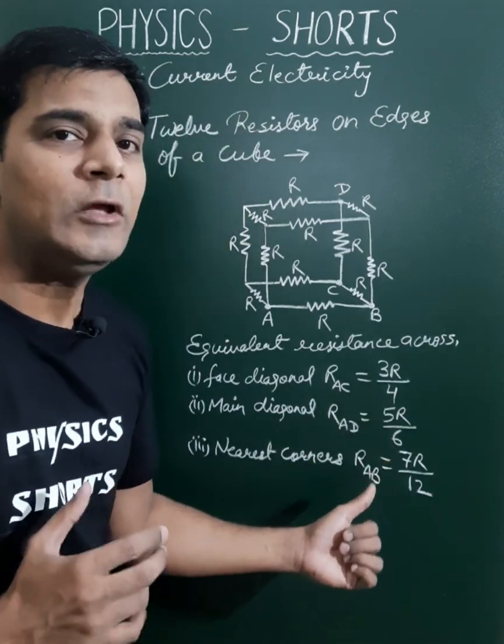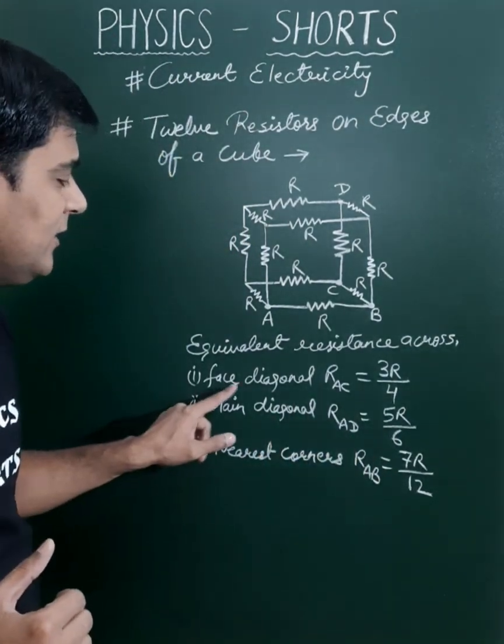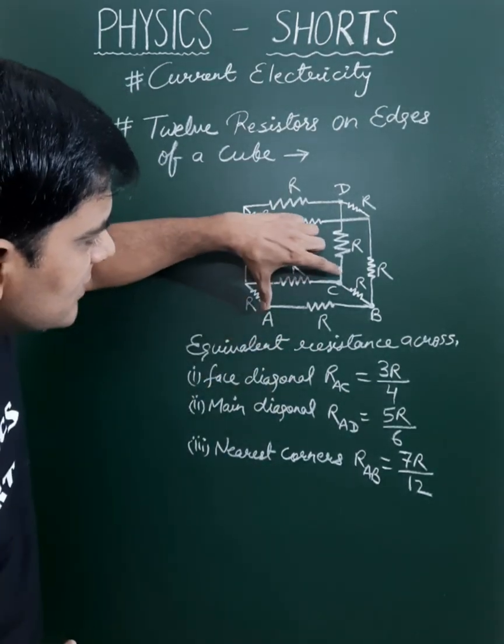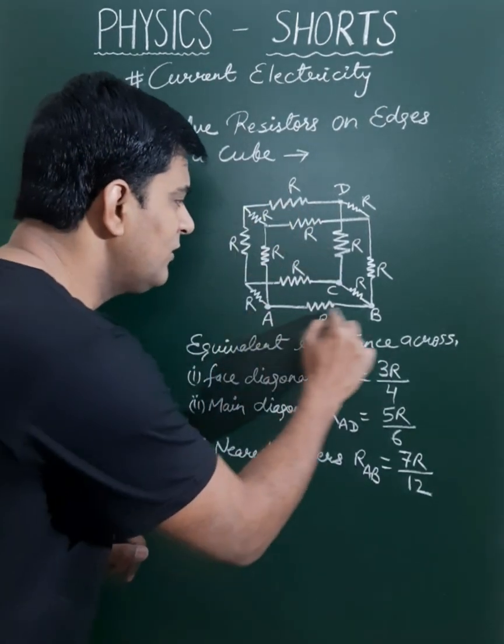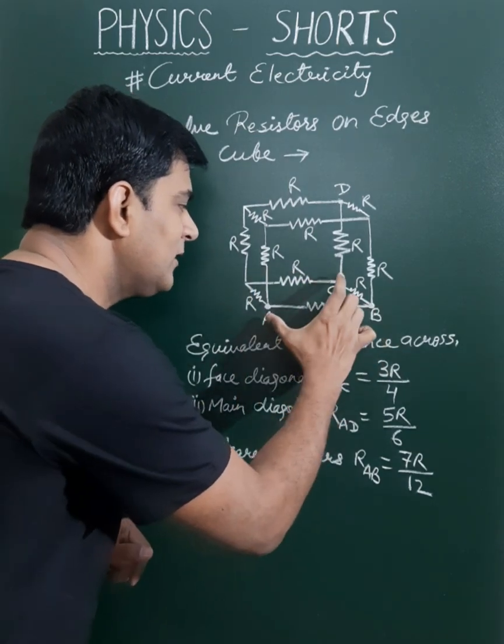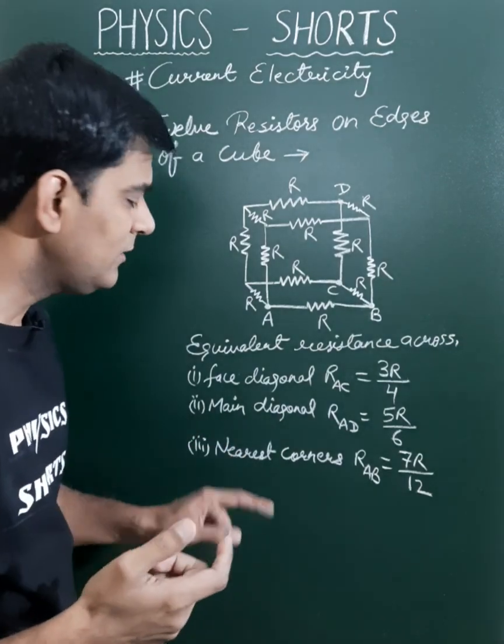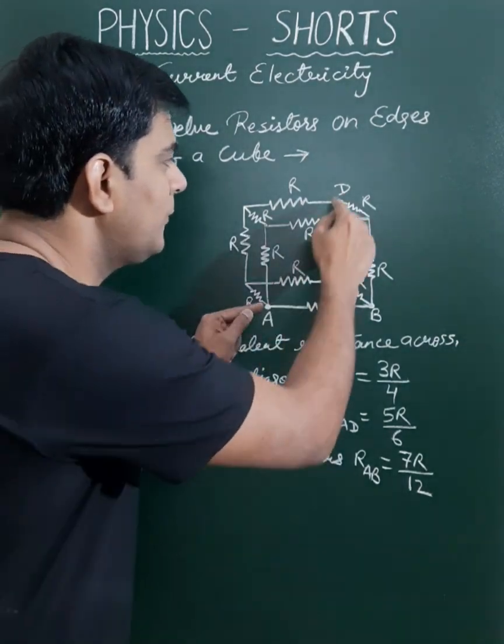To find the equivalent resistances, in the first case we are taking the face diagonal points. In this circuit, the face diagonal points are A and C. Across these face diagonal points AC, the resistance will be 3R/4.